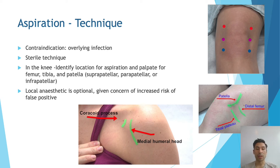This is a very sterile procedure, and as you can see in the picture, you want to aim between the tibial plateau, the femur, and the patella. The most common point that most people go through is the lateral superior point. Local anaesthetic is optional, but it does give concern of an increased risk of a false positive.